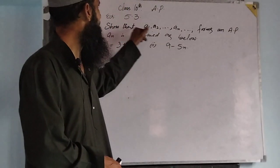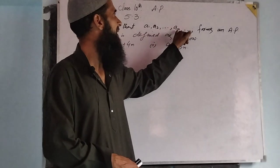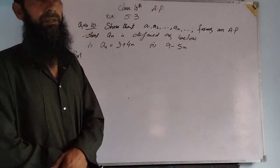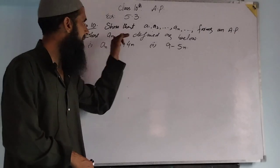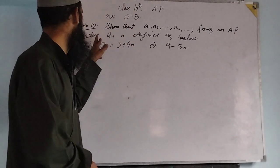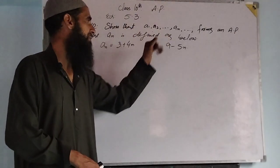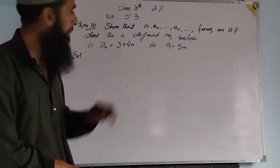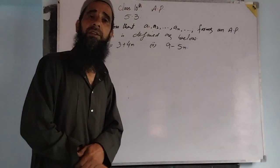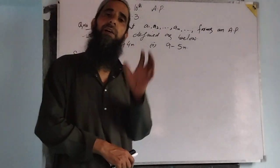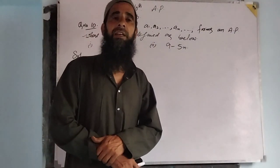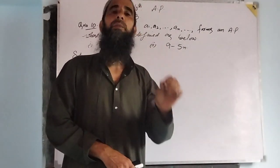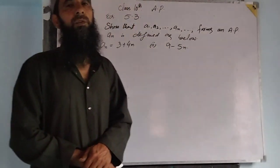We have here question: show that a1, a2, so on up to an forms an Arithmetic Progression. Here we show that in Arithmetic Progression, where a1 is defined as the first term. There are two parts of this question. I will discuss one part here and the next part is for your home assignment.